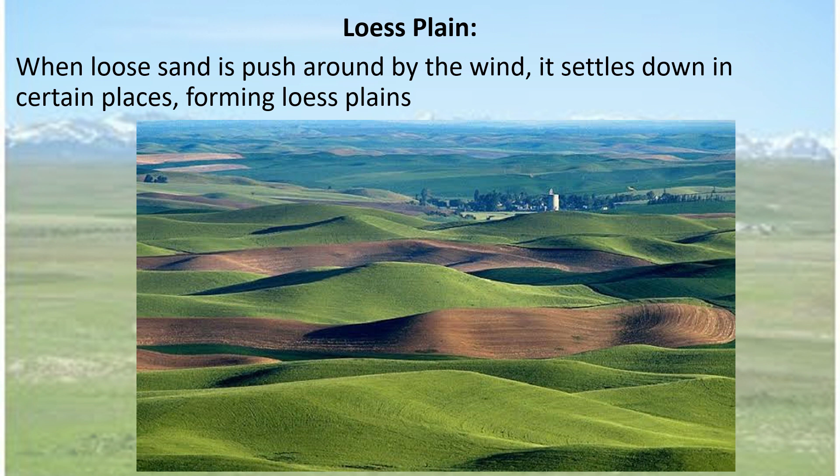Sometimes sand is very, very loose. The word loess actually means loose — L-O-O-S-E, not L-O-S-E. Please remember. When this loose sand is pushed around by the wind, it settles down in certain places. The wind takes the soil, throws it up in the air, and in certain places it piles up, and in certain places it's quite damp. When this kind of structure happens, these piles are neither hills nor mountains — they're quite flat but quite low, and not as high as hills or mountains. As you can see in the picture, these are the lowest plains.